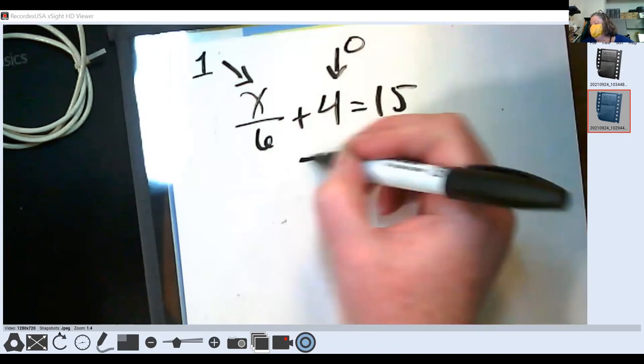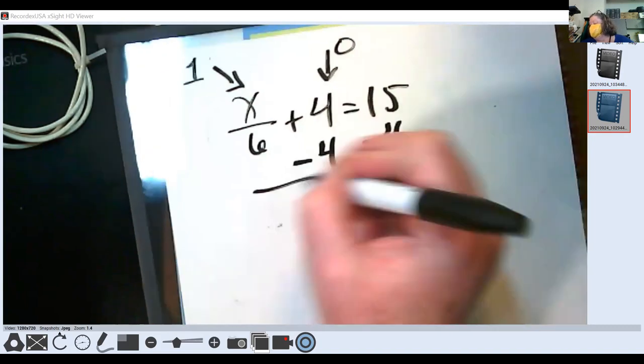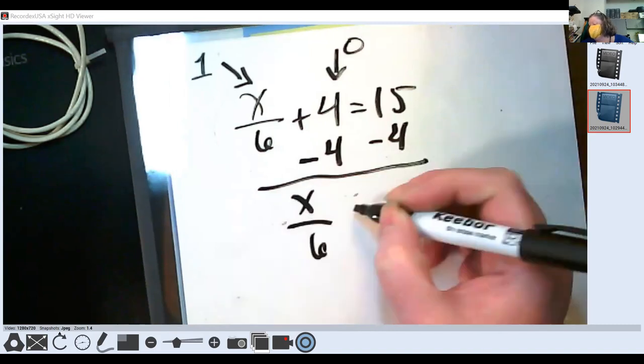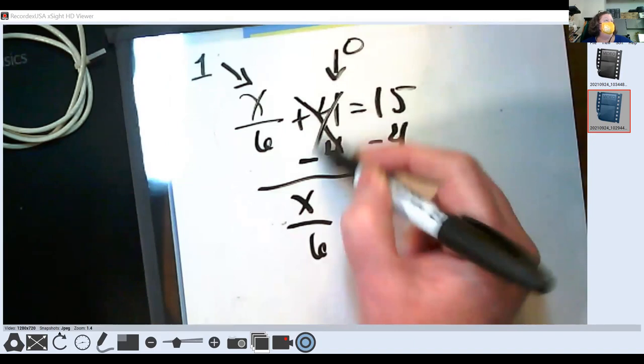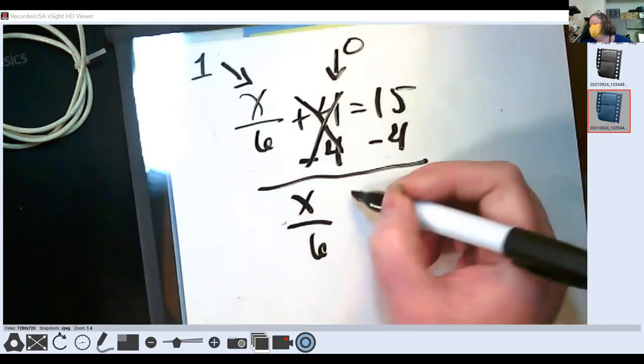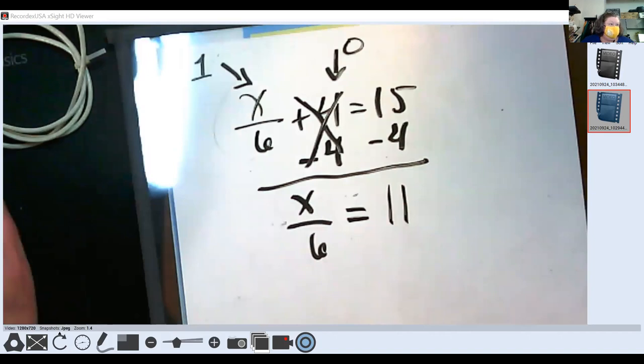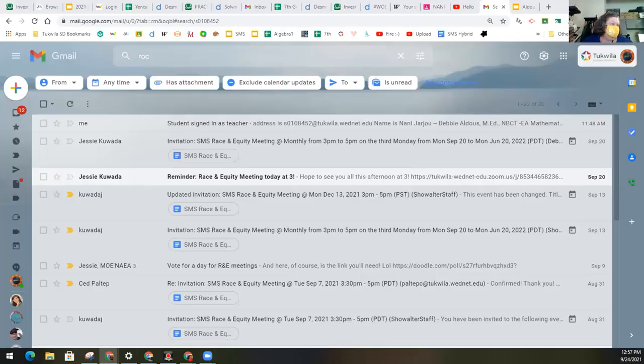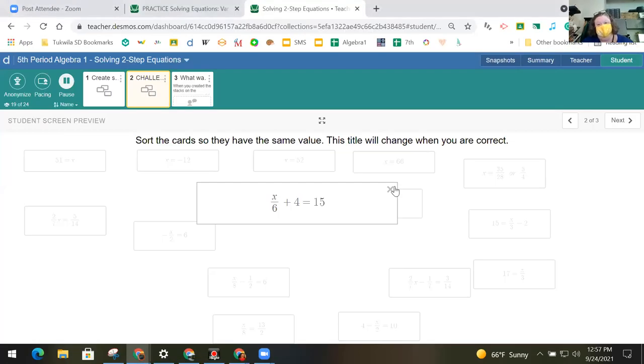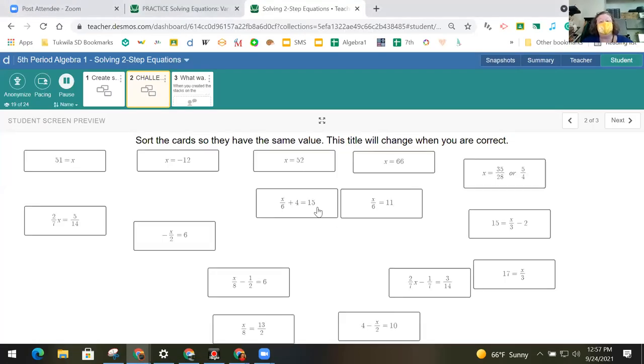I'm going to start with this. And when I do, I get x divided by six plus zero is equal to eleven. So now I know that those two cards do go together. I've got too many screens now. I'm not sure what I'm showing. This is what I want.